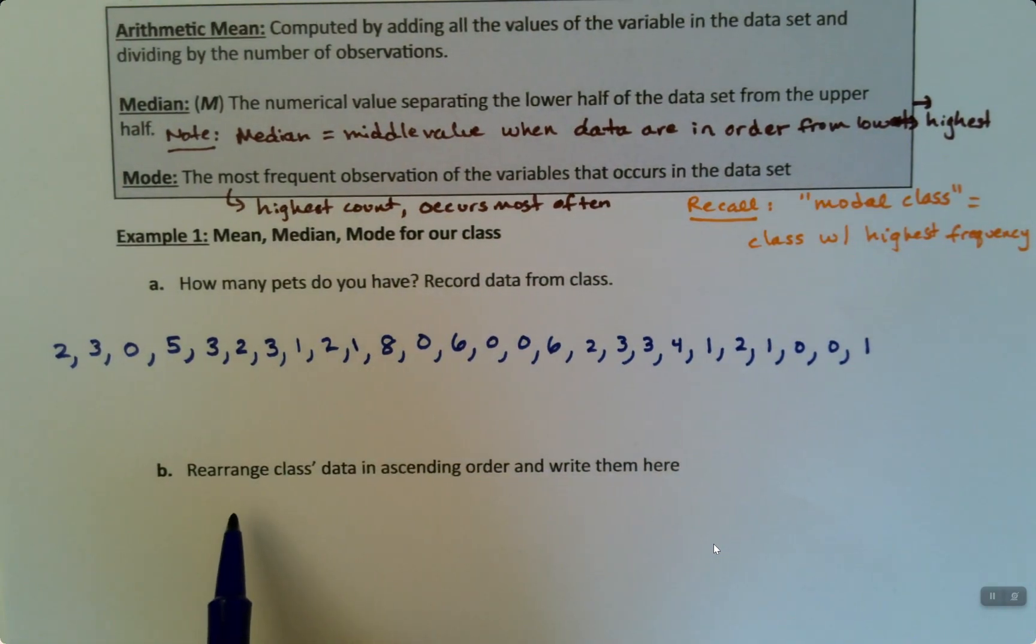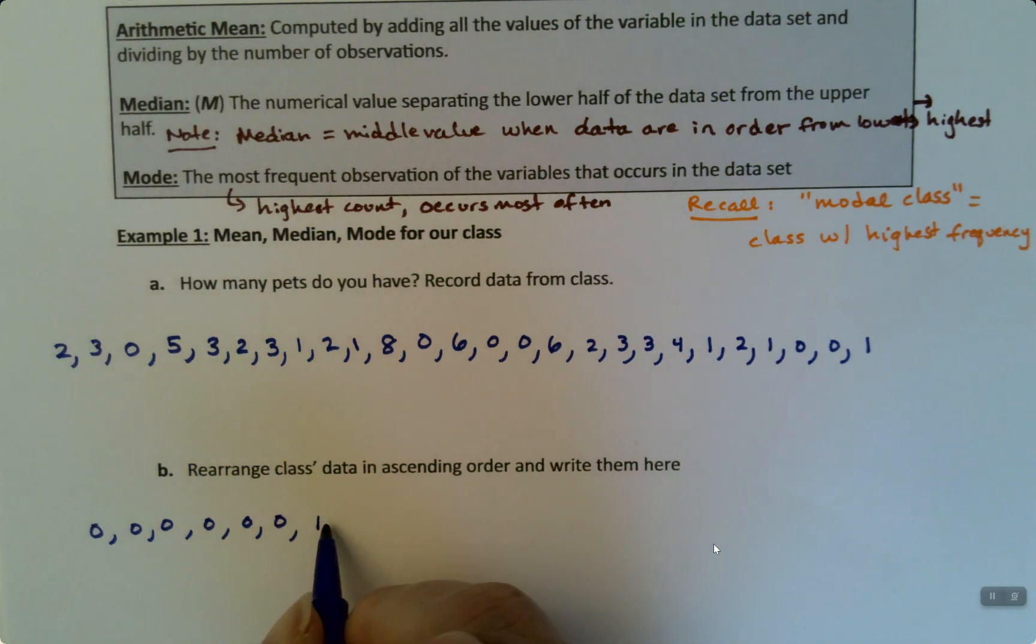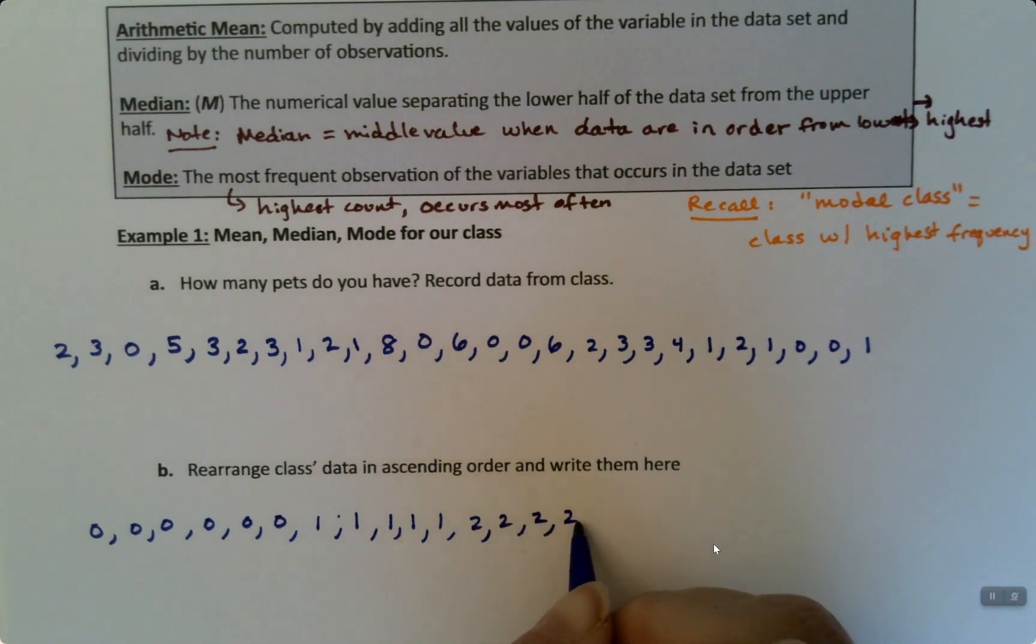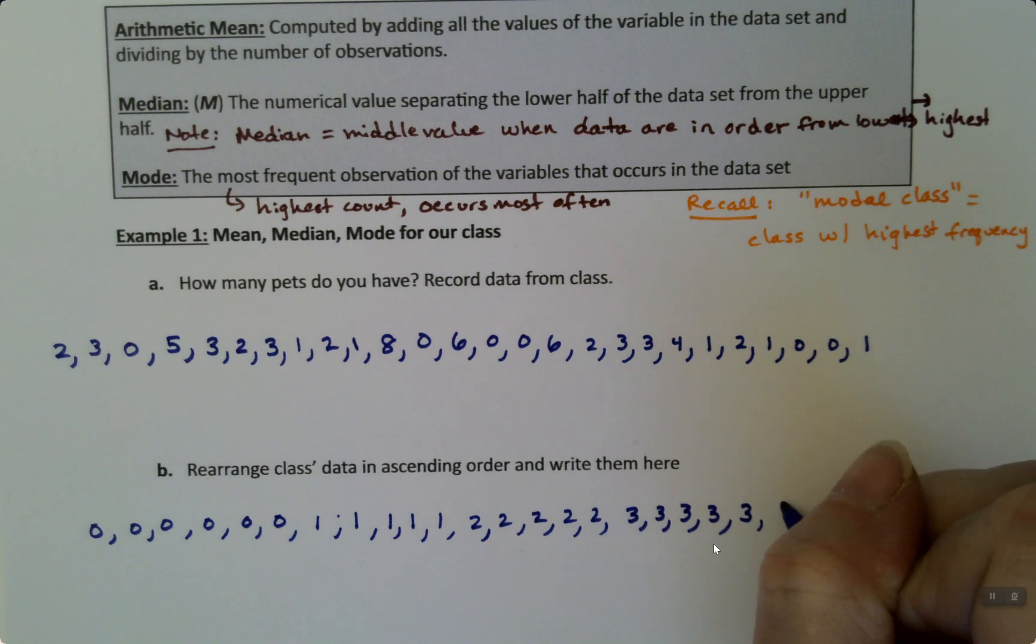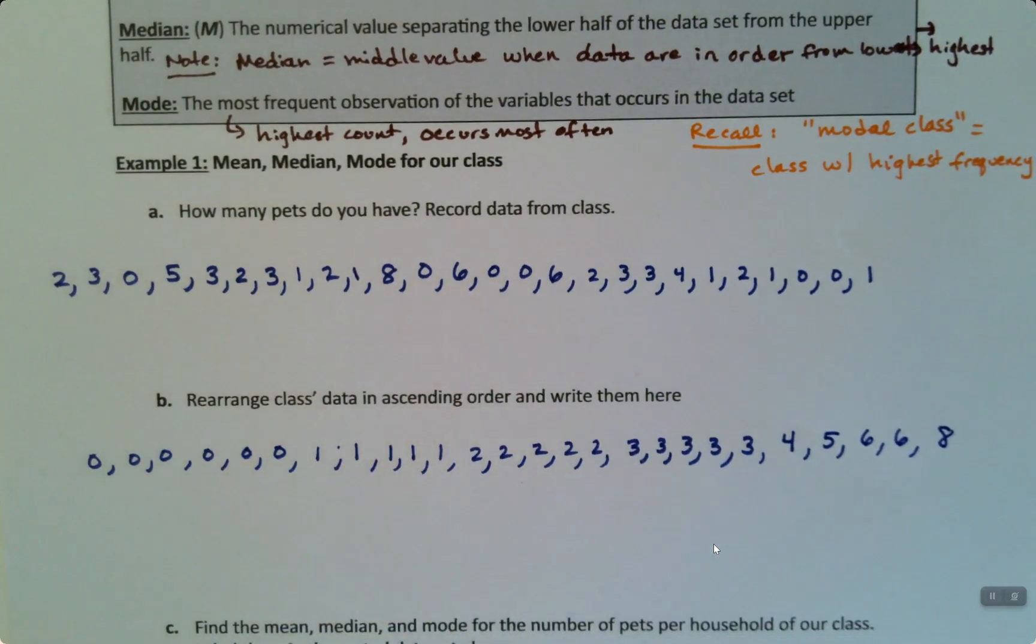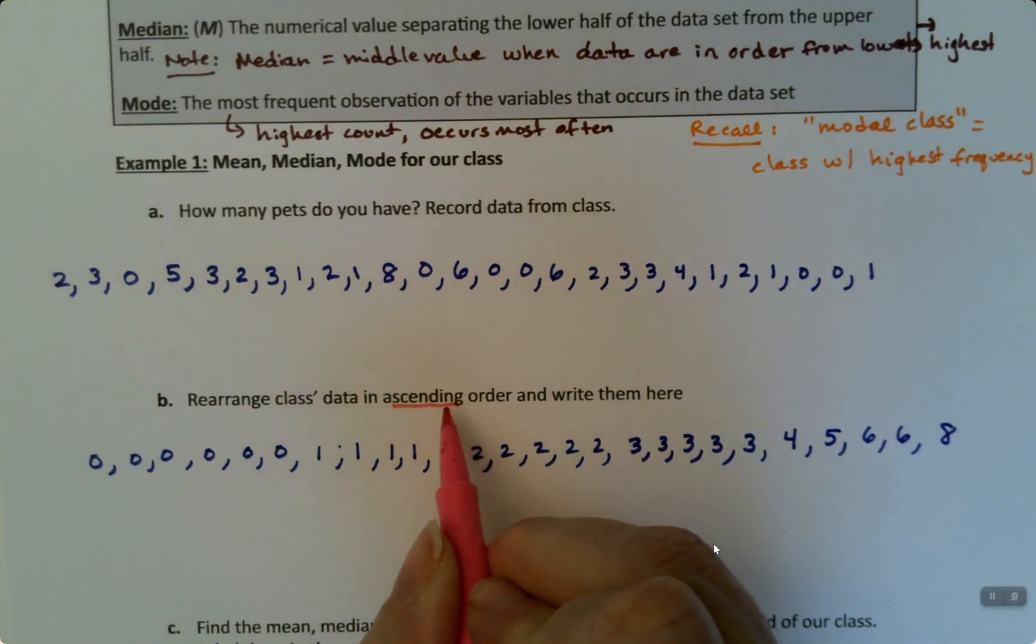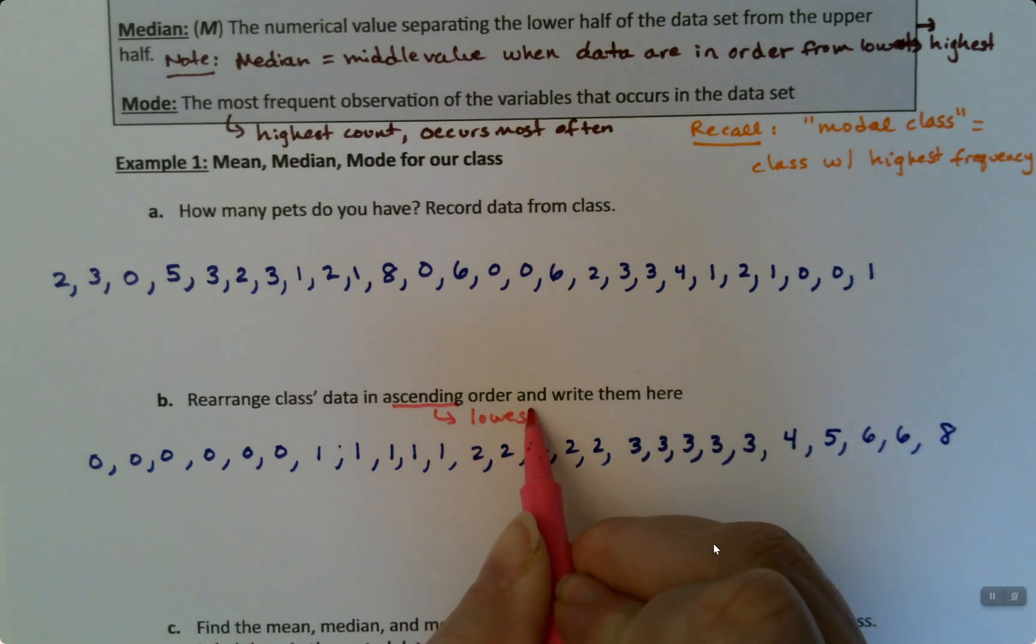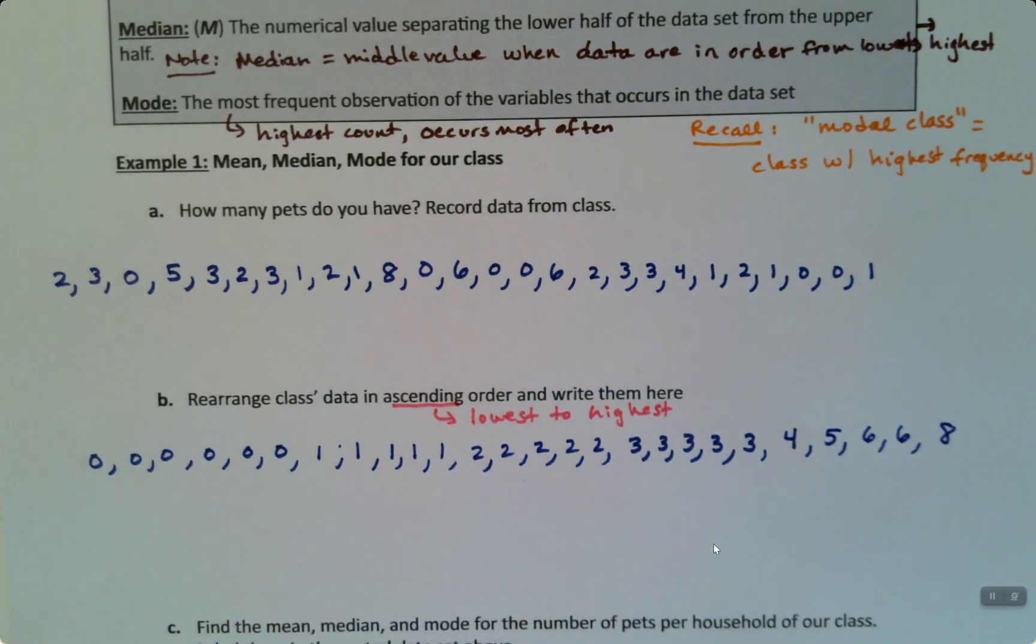Now we're going to rearrange this data set in order. So there are six zeros. So one, two, three, four, five, six. There are five ones. Five twos. Five threes. Yes, this was a real class. This is just what happened that day. Four, five, two sixes, and an eight. That's the data in ascending order. Now ascending is referring to what we need to have in order to find the mode. Ascending order means from lowest to highest, what we wrote up above. So I'm putting them in order so that I can find the median by hand. Medians by hand is not something we generally do a lot of. But it doesn't hurt to do it once just to see how it works.